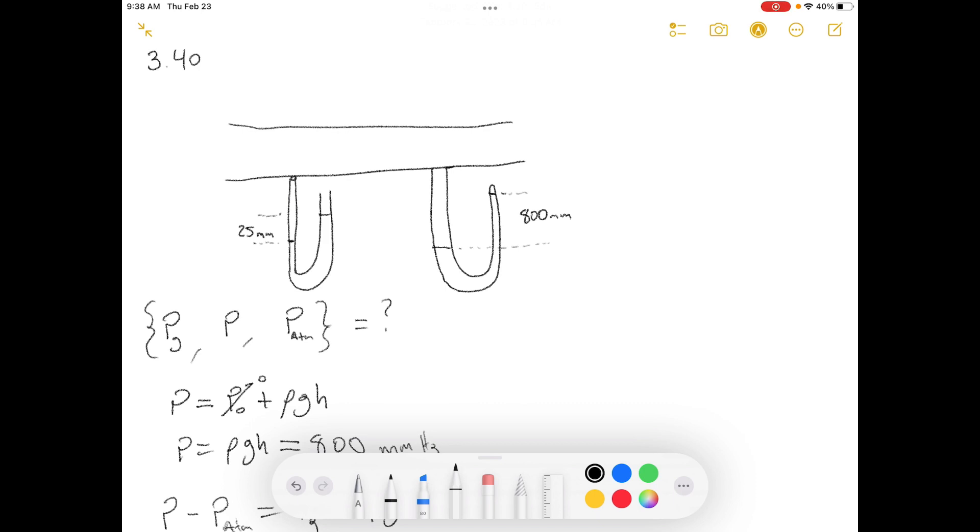So we have two manometers. Both are attached to the same duct, as you can see here in the diagram. This manometer, the open end manometer, takes the pressure difference between the atmospheric and that in the duct. This manometer is closed and so the reference pressure in this case is vacuum.